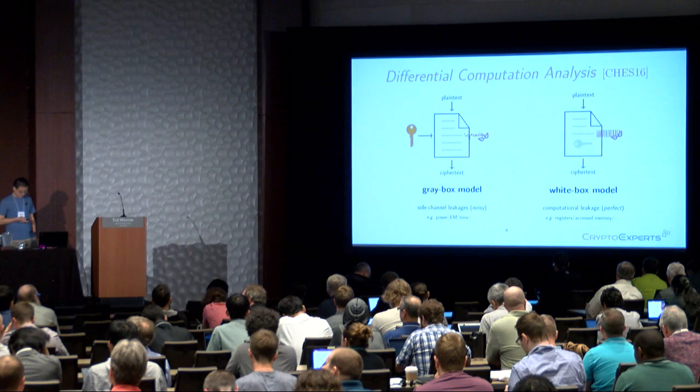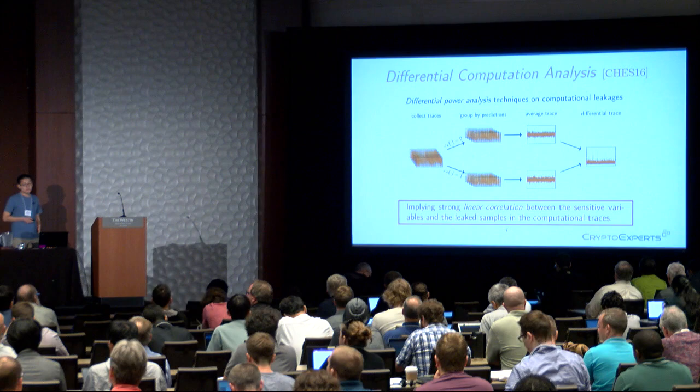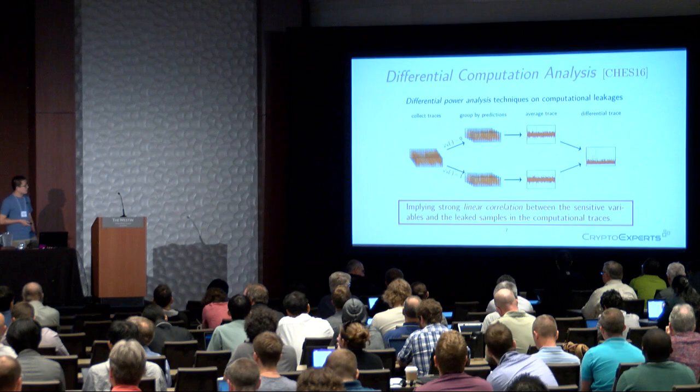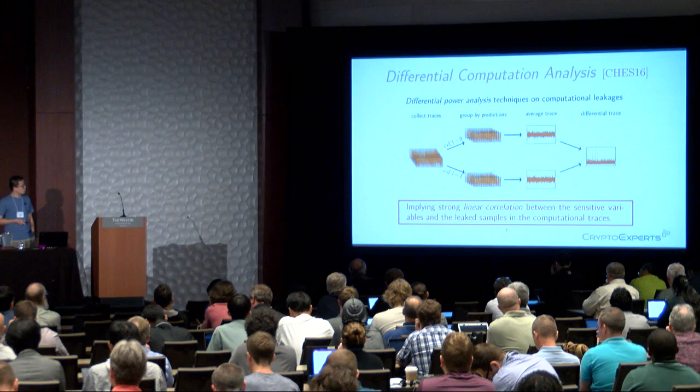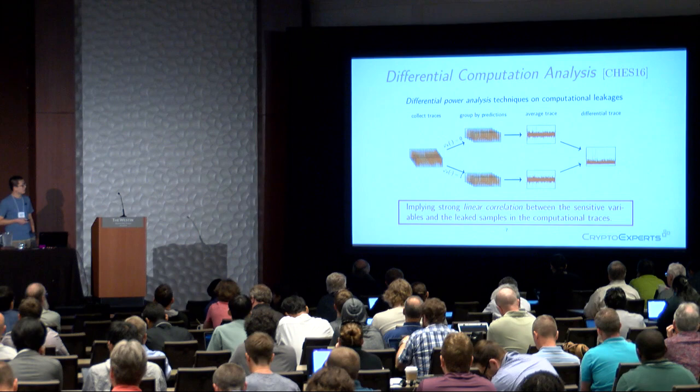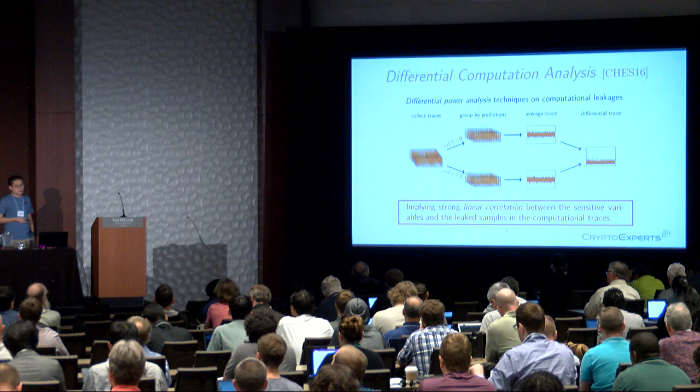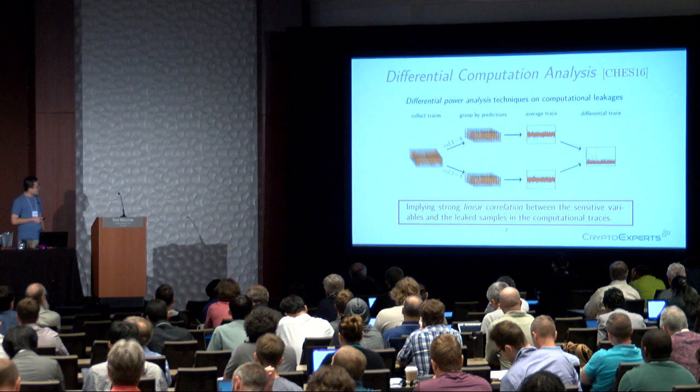The principle of DCA is: first, collect many traces for different inputs; then select some key-dependent target function and make key guesses. Based on the prediction of this target variable, we divide the traces into two groups, compute an average trace for each group, and compute the difference trace. If this technique works, it implies there is a strong linear correlation between the target variable f_k and the leaked symbol in the traces.